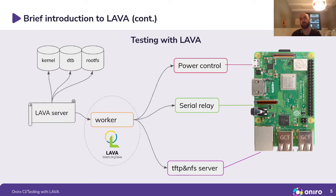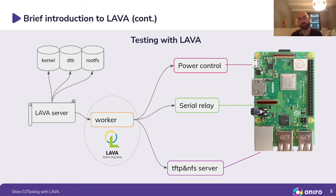Lava achieves all of this automatically. There are two main parts of Lava: the Lava server and the Lava worker. The Lava worker is physically connected to the DUT via serial relay and in some cases other things. The Lava worker controls the power of the board, deploys the image in an automated fashion, collects all the results from tests, and sends them to the Lava server.